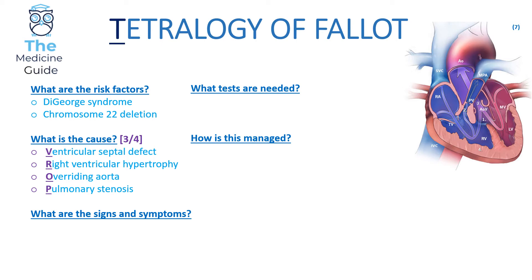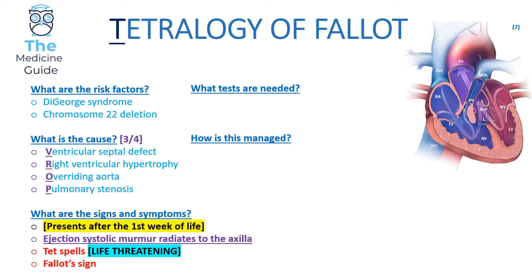A child with Tetralogy of Fallot presents with cyanosis after the first week of life — any child presenting with cyanosis in the first week is Transposition of the Great Arteries unless proven otherwise. They will also have an ejection systolic murmur from pulmonary stenosis, experience tet spells, and display the Fallot sign. Tet spells are life-threatening episodes where the child appears very blue when crying or feeding.